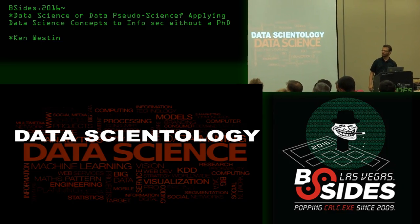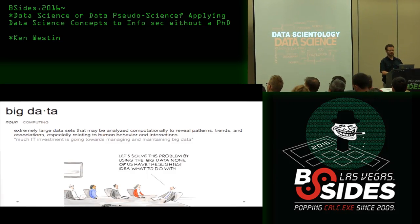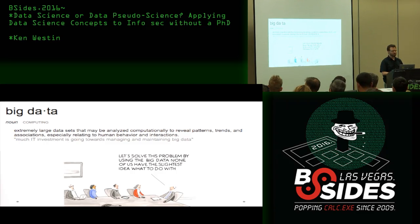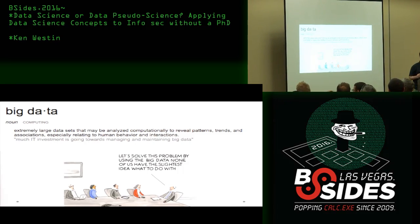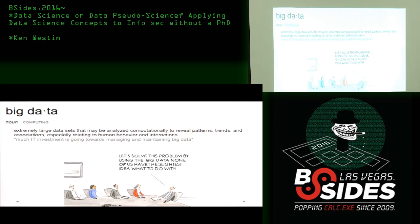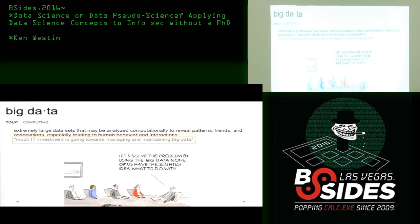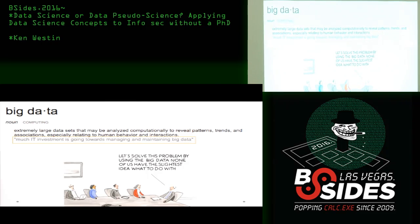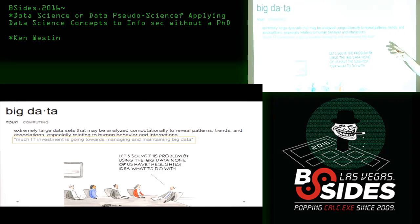I did a little word cloud — these are all the different terms I saw around data science and it's really confusing, there's a lot of word soup. I'm going to start with big data because that's sort of how data science got started. I looked up the definition and thought it was funny — the example sentence says 'so much IT investment is going towards managing and maintaining big data.' It's not talking about the value you're actually getting out of leveraging big data, but always about the cost of collecting this information.